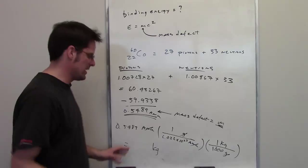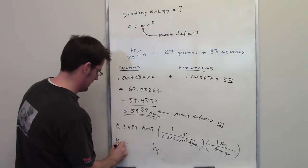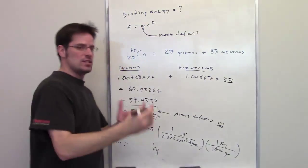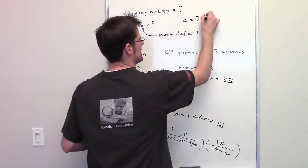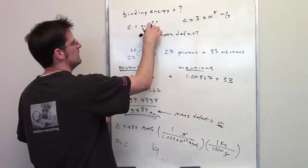Well anyway, so that final answer ends up being a number in kilograms, and that is your m. You throw that m in here, multiply it by c squared, and c, by the way, is the speed of light, which is 3 times 10 to the 8th meters per second. You square that, you end up getting, and multiply it by your kilograms...